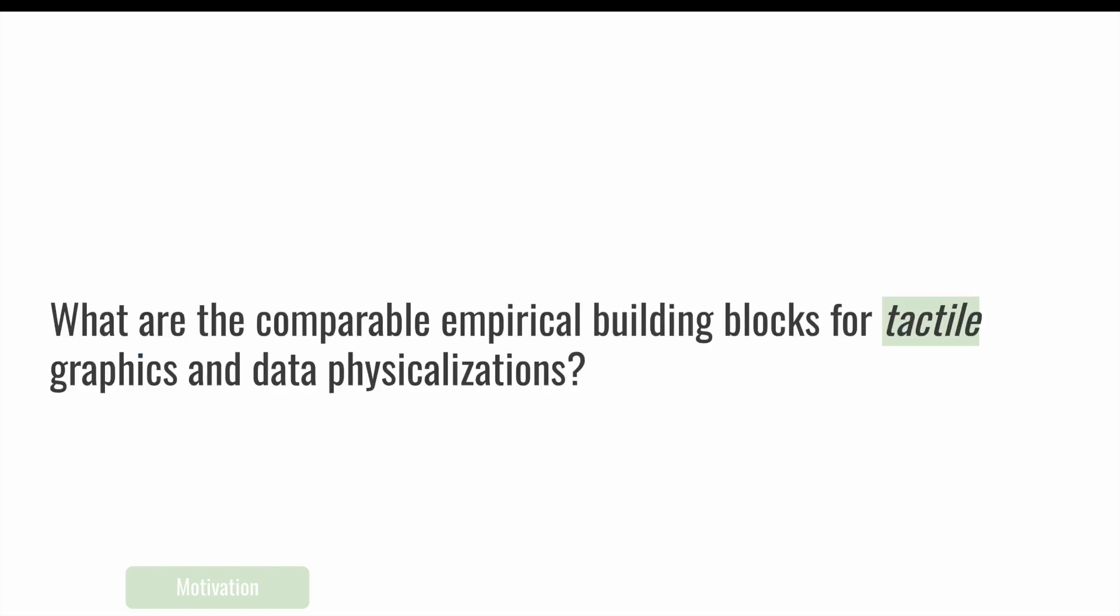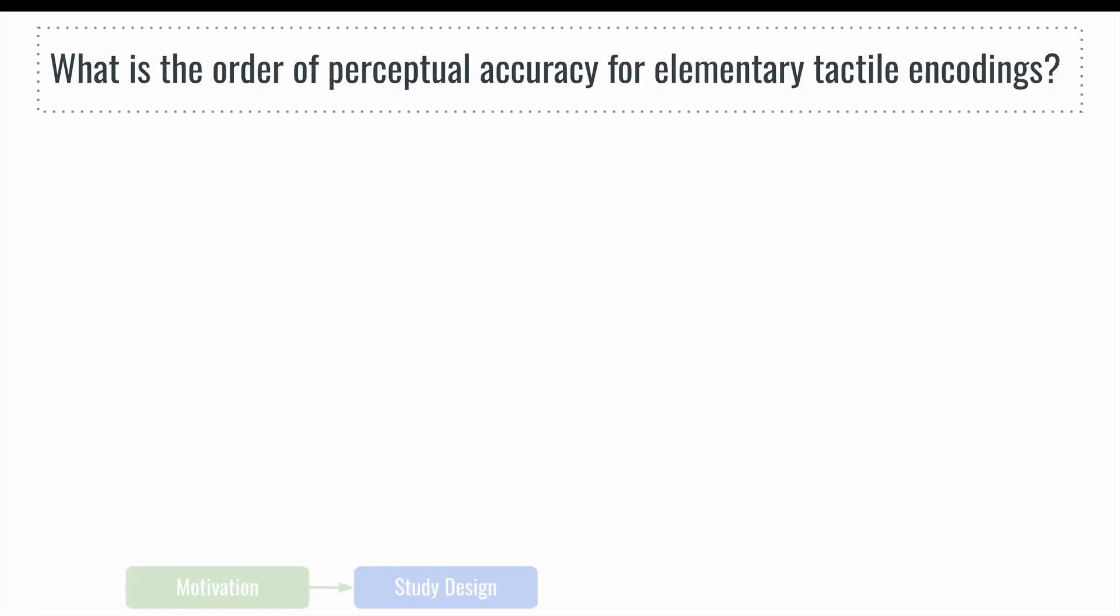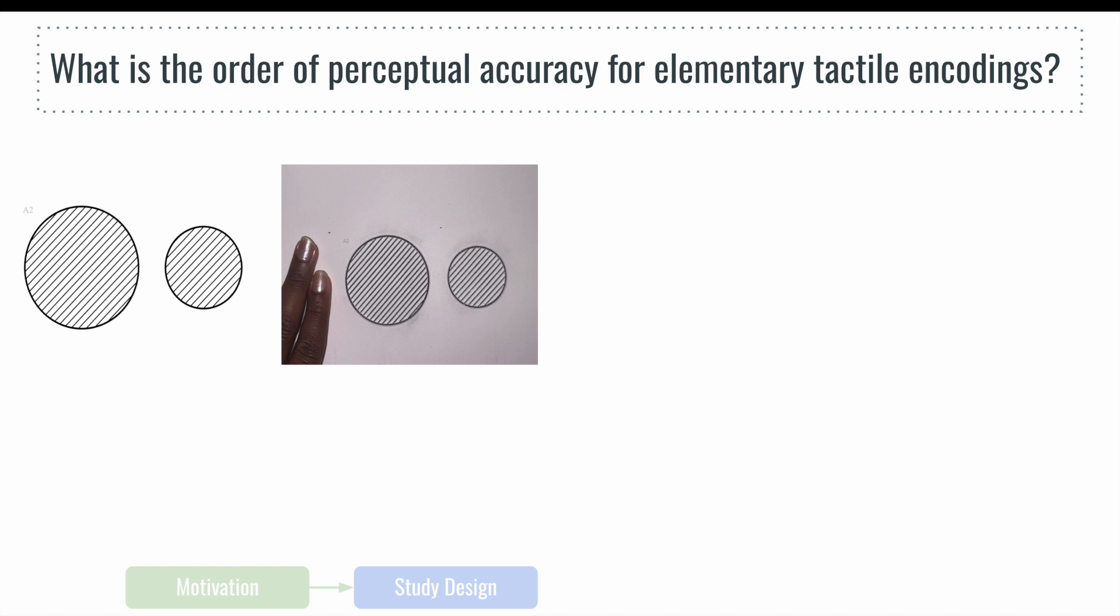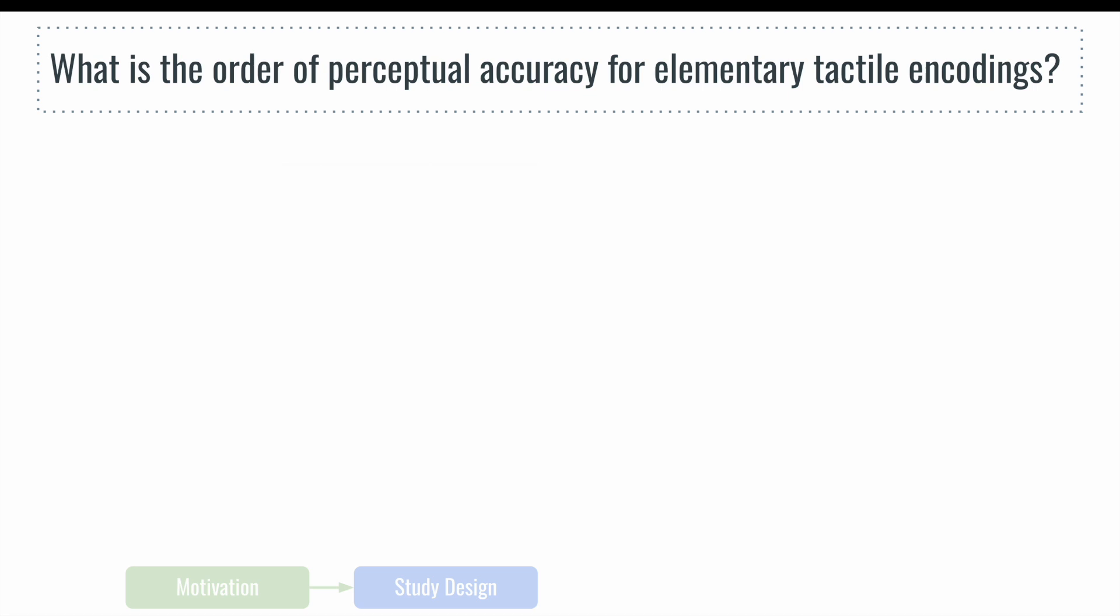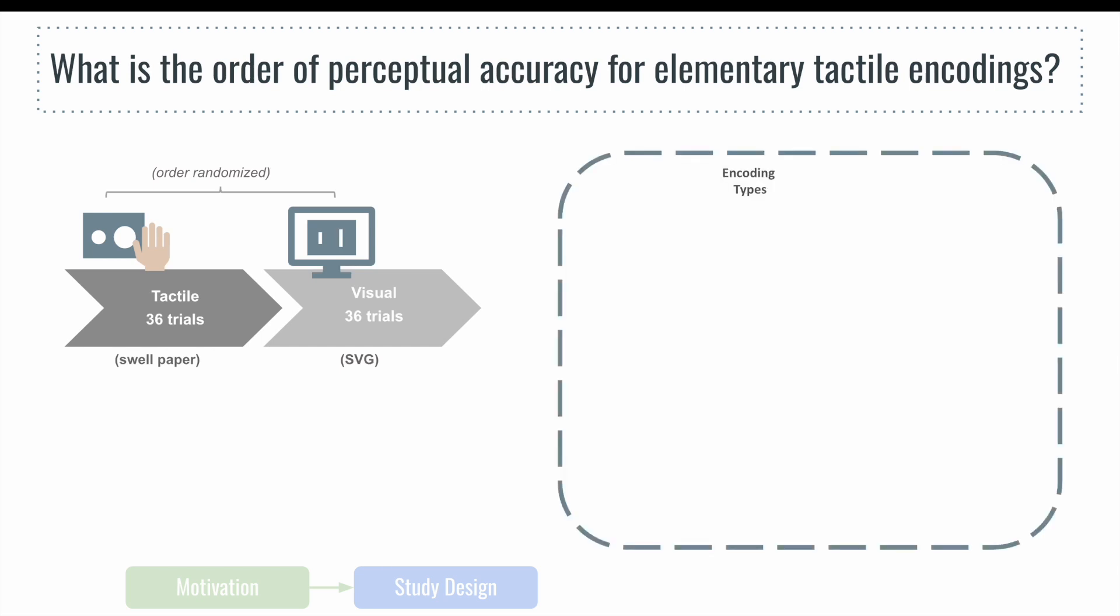Motivated by these contexts, we addressed the question: what are the empirical building blocks for tactile graphics and data physicalizations? We conducted a study to assess how accurately people can perceive data relationships when they are visually encoded as SVG shapes on a screen compared to when they are tangibly encoded using swell paper to raise the image above the page. We tested six elementary encodings studied by Cleveland and McGill including length, area, position on non-aligned and aligned scales, curvature, and shading.